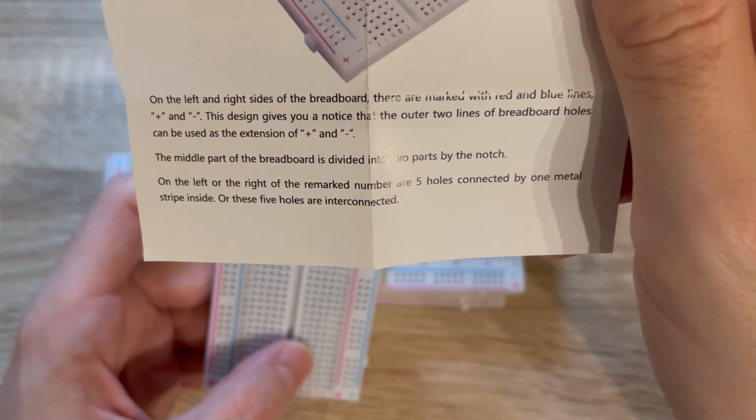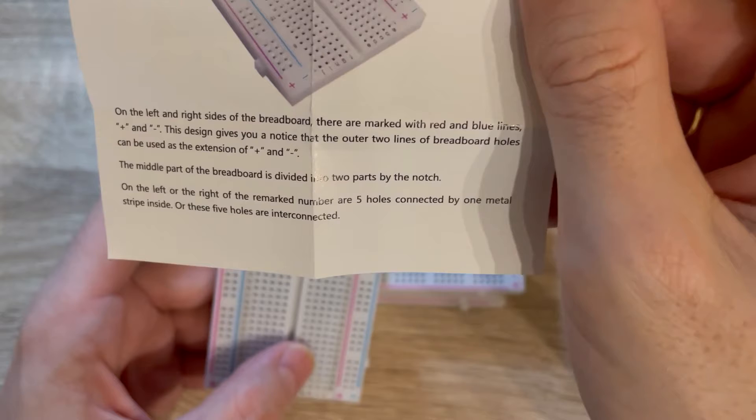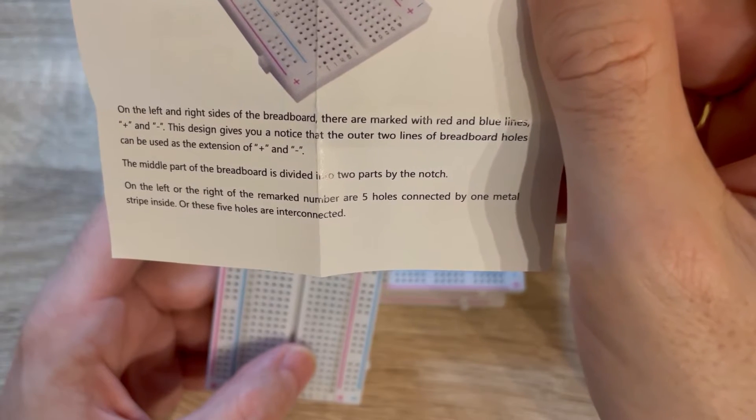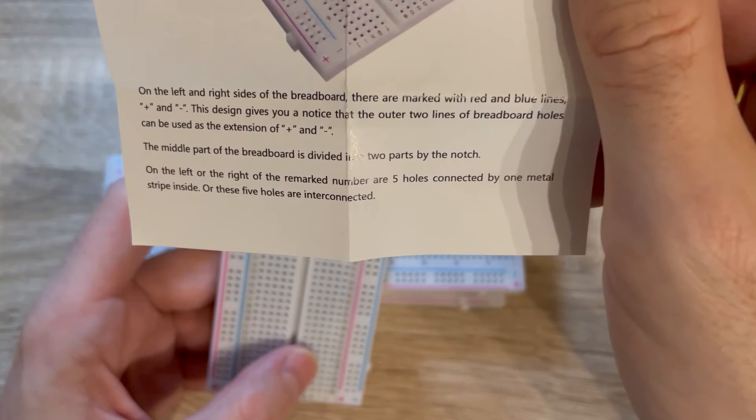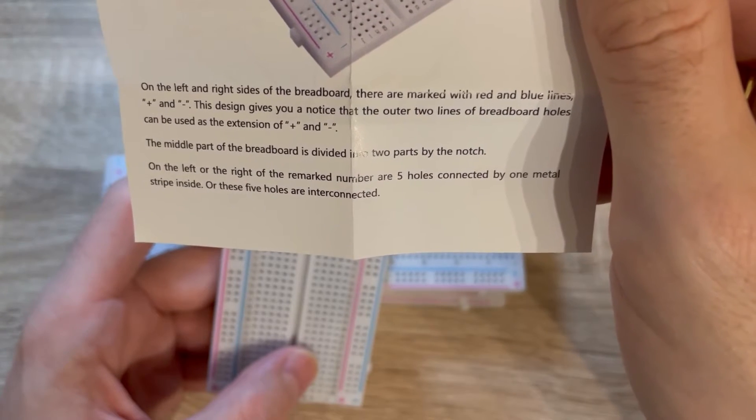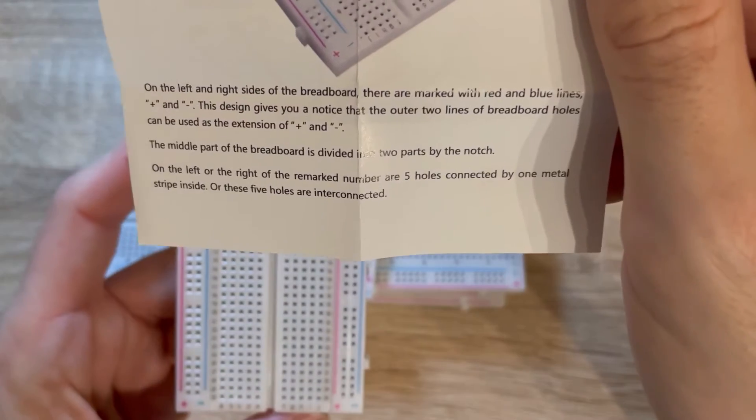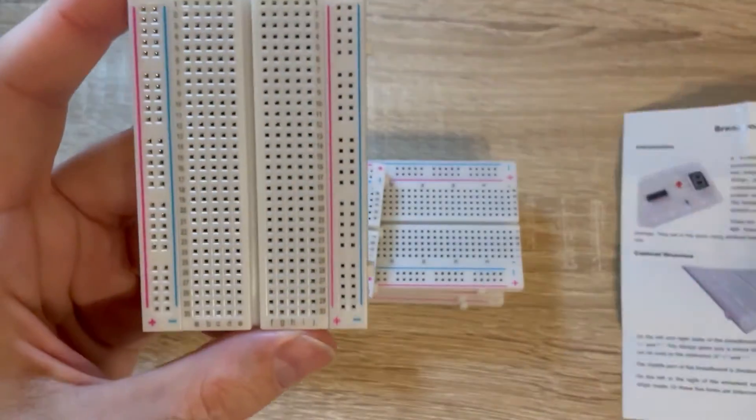'On the left or the right of the marked number are five holes connected by one metal stripe inside.' These five holes are interconnected. So yeah, I think they mean all these five holes are interconnected.